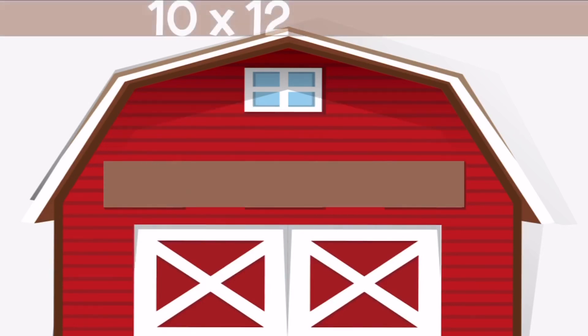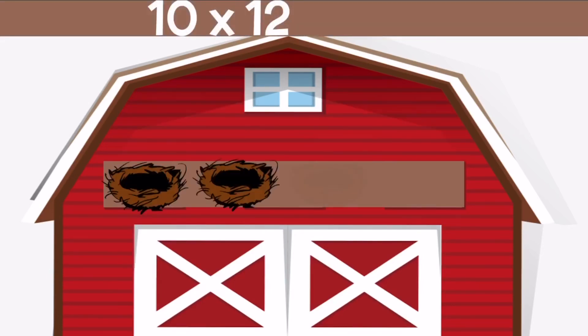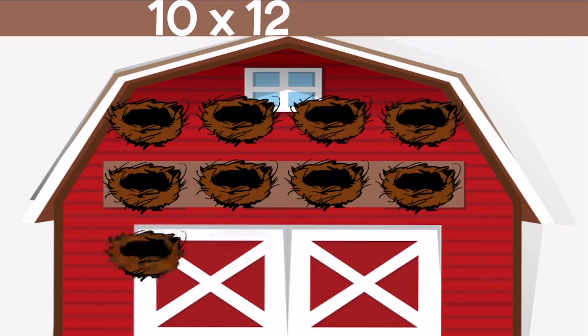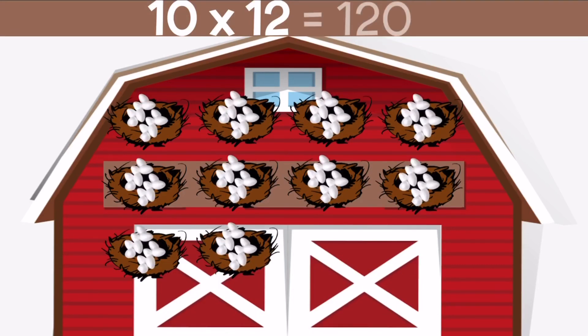10 times 12 — we need 10 nests with 12 eggs in each nest. If we count up all of our eggs we get 120.